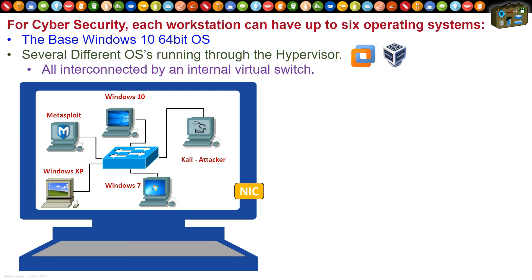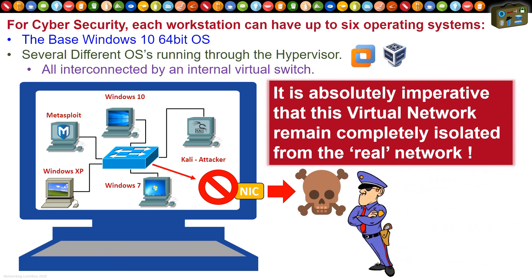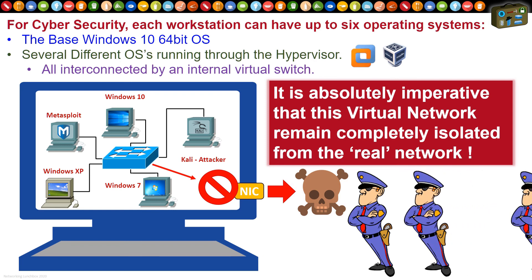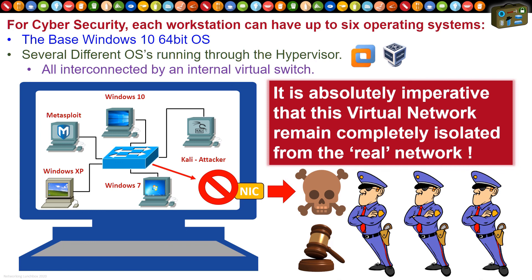The most critical factor about this setup is that we never allow any of these virtual machines to be bridged to our network card, because Metasploit and Kali — and even Windows if it has viruses placed there by Metasploit or Kali — can do really bad things if that traffic leaks out onto our network. Absolutely make sure that those OSs are locally switched by their own internal networking.